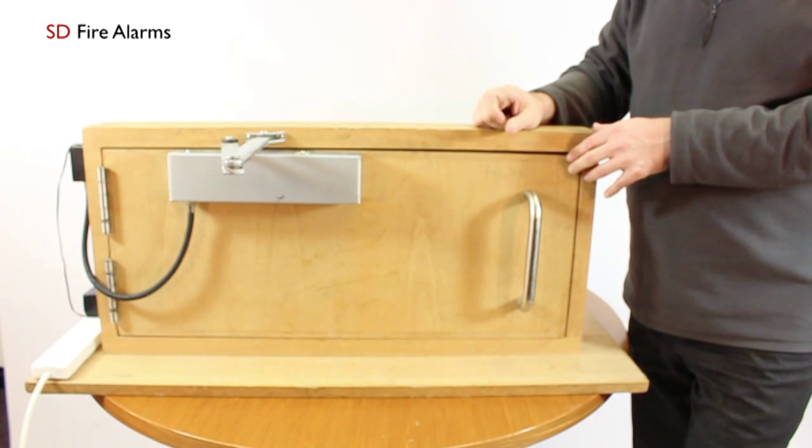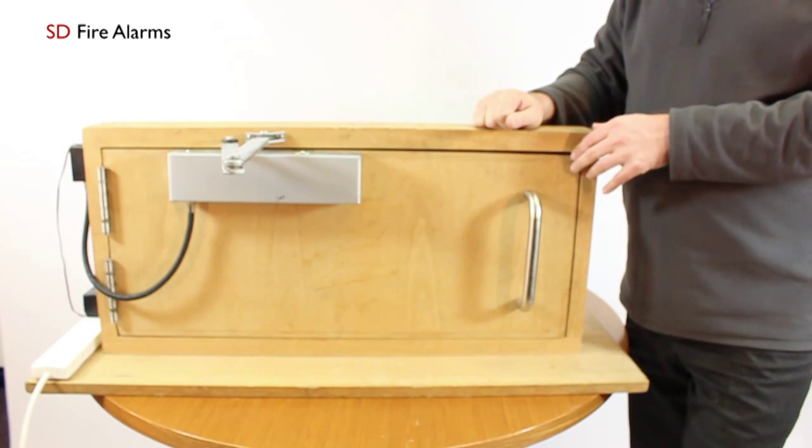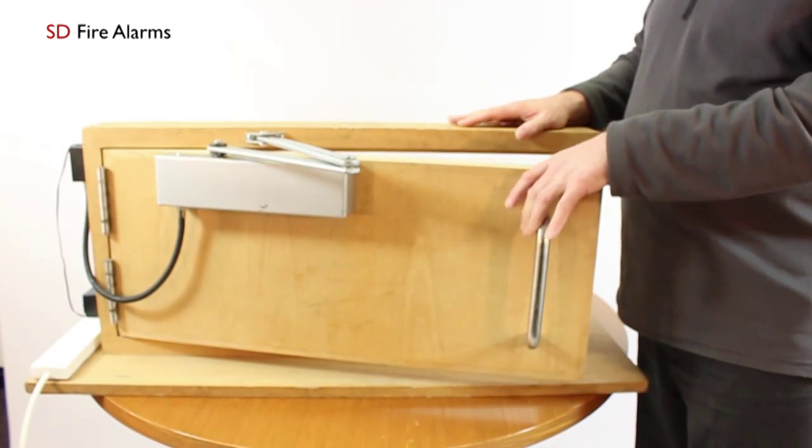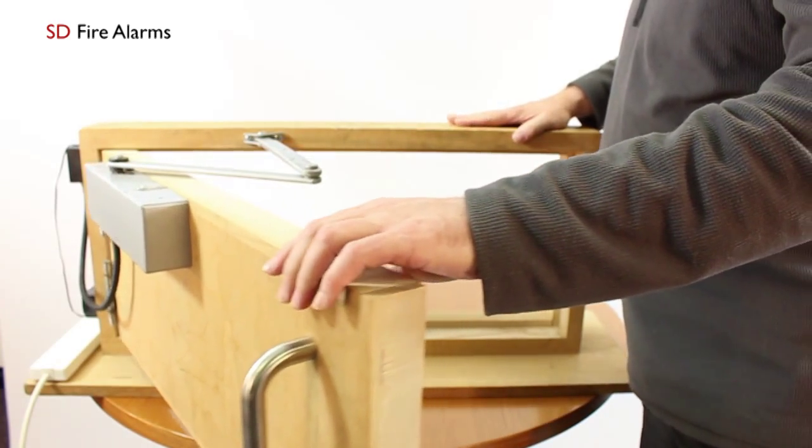Today I'm showing you a door closer that's manufactured by Arrow Door Controls. It's a British made product. It's a door closer that can be held open by a 24 volt power supply. It's held back by a solenoid.